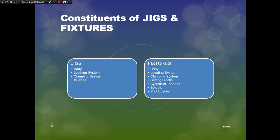The body or base is used to support and carry various components of jigs and fixtures. The locating system is used for proper positioning of the work piece with respect to the tool. The clamping system — clamping elements hold the work piece firmly in engagement with locating devices during the operation. Indexing devices are used for positioning different holes. Tool guiding elements are used for imparting the required direction of motion to the cutting tool.